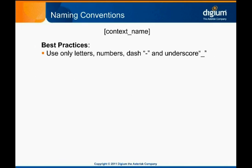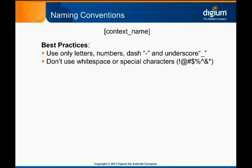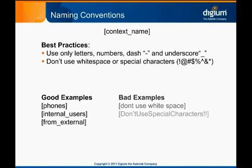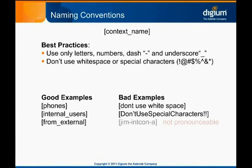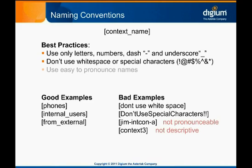We recommend against using whitespace and special characters because these can make your dial plan much harder to troubleshoot and test. In the first example file, you can see that we've listed Phones, Internal, and From Outside as good context names, and several other examples of context names we don't recommend because they've included special characters, whitespace, or they're unpronounceable or not descriptive. Remember that context names are labels that can be used to make things simpler and more manageable for the Asterisk administrator.